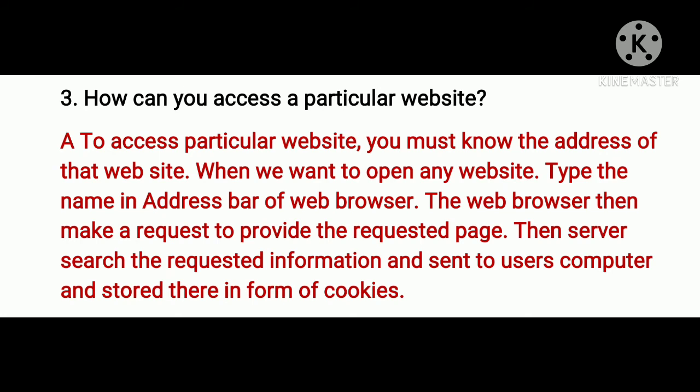Number 3: how can you access a particular website? Answer: to access a particular website, you must know the address of that website. When we want to open any website, type the name in the address bar of the web browser. The web browser then makes a request to provide the requested page. The server searches the requested information and sends it to the user's computer, stored in the form of cookies.